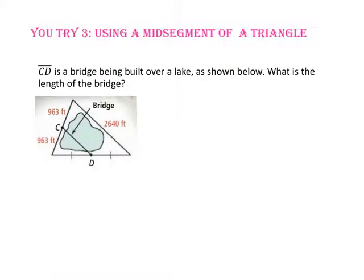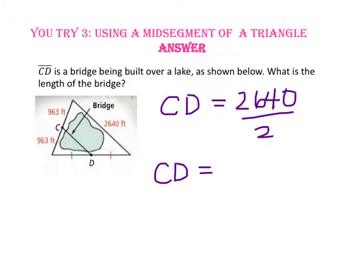Pause the video and do U-try number 3. Segment CD is a bridge built over a lake as shown below. What is the length of the bridge? Point C is the midpoint of one side, since both parts measure 963 feet, and point D is the midpoint of the other side as shown by the congruence marks. Since side CD is the mid-segment of the triangle, it is half the length of the side it is parallel to — half of 2640 feet — so the length of segment CD is 1320 feet.